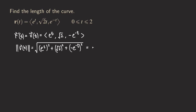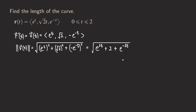Now let's square each term and see what happens. (e^t)² gives e^(2t). (√2)² gives 2. For the last term, we have −t times 2, giving e^(−2t), and the negative sign disappears because we're squaring it. So we are left with e^(2t) + 2 + e^(−2t) under the square root.